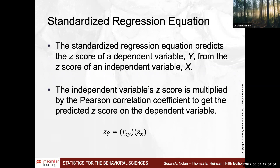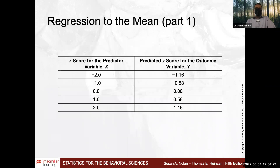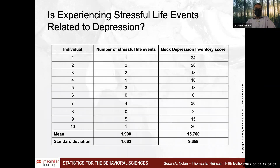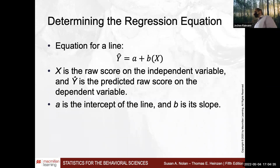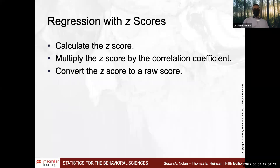Y-hat, which is our predicted y, is a function of our correlation coefficient, which gives you an idea about the strength and direction of the association — essentially the slope — and the z-score of x, from which you can predict y. This predicted y gives you a linear equation that you can determine by quantifying a (the intercept) and b (the slope), which characterizes the linear function.